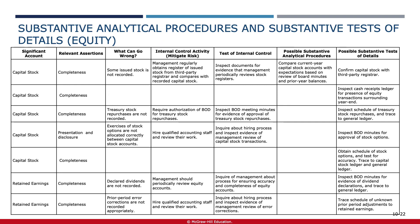Substantive audit procedures designed to gather evidence about stockholders' equity include physically inspecting stock certificates and other evidence of ownership to verify existence and proper valuation. Auditors can confirm the number of outstanding shares directly with the registrar or transfer agent, providing independent assurance about the existence and valuation of stockholders' equity. Auditors also trace the balances of stockholders' equity accounts to board minutes, subscription agreements, and other supporting documents to ensure all equity transactions, including new issuances, are accurately recorded. They reconcile the total number of outstanding shares to the stockholders' equity accounts and supporting documentation to verify that all equity transactions are appropriately recorded in the financial statements.